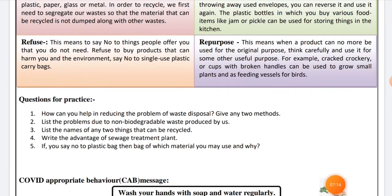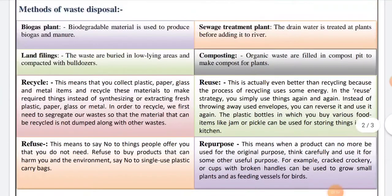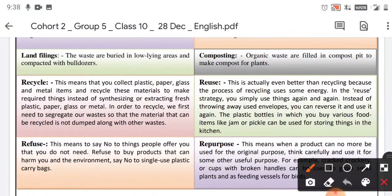Question 3: List the names of any two things that can be recycled. We can write plastics, paper, and metal items as materials that can be recycled again.